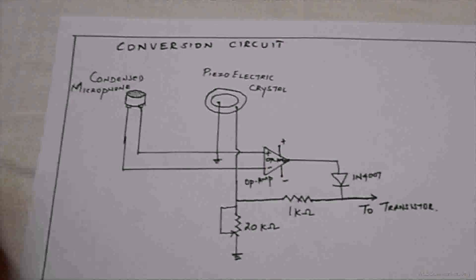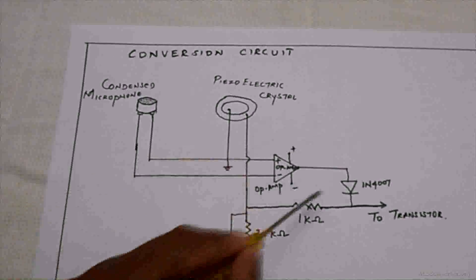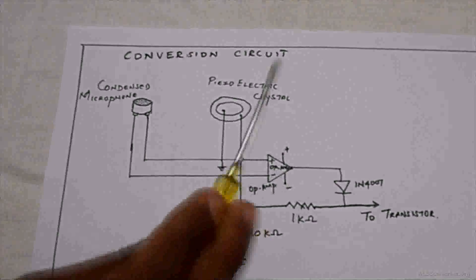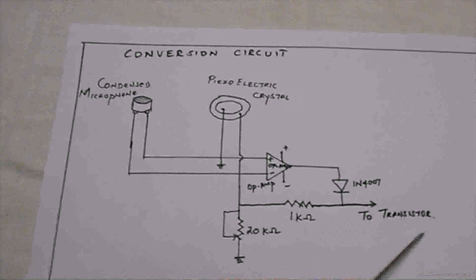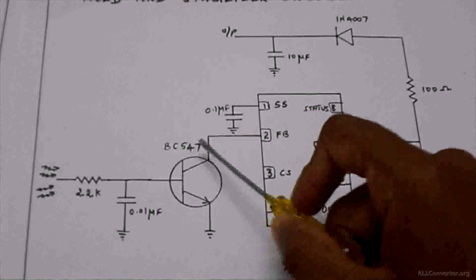When the voice signal is given, the operational amplifier will give the positive output voltage. The positive output voltage is given to the transistor. The output from the operational amplifier is given as input to the transistor BC547.